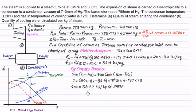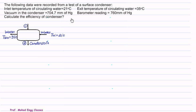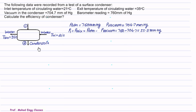In question 4, the inlet temperature of circulating water is 21°C (TWI) and the exit temperature of water is 35°C (TWO). The vacuum inside the condenser is 704.7 mm of Hg and the local atmospheric pressure is 760 mm of Hg. We need to calculate the efficiency of the condenser. First, we find the condenser pressure: P_mix = P_atmospheric − P_vacuum = 760 − 704.7 = 55.3 mm of Hg.